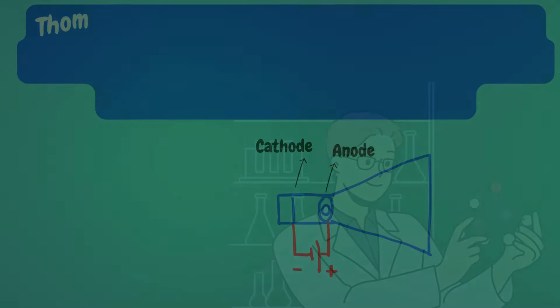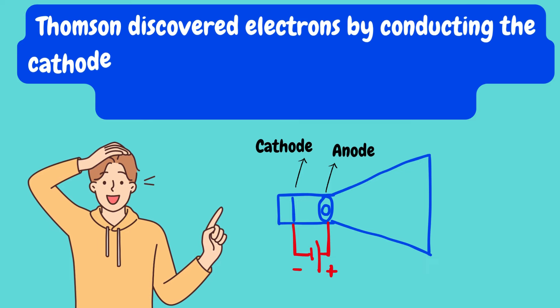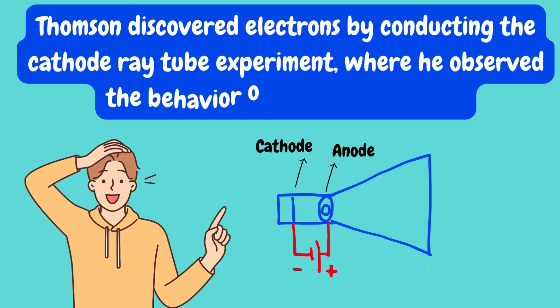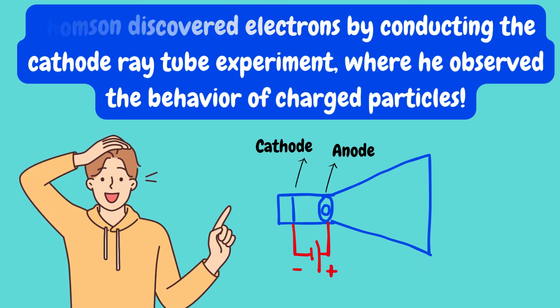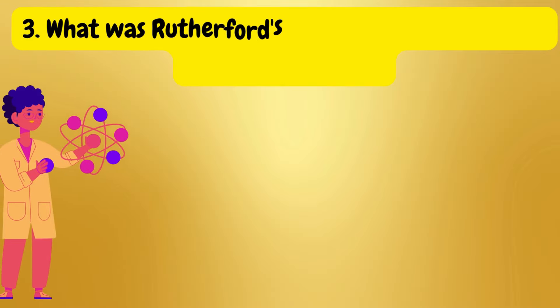Question two: How did Thompson discover electrons? J.J. Thompson discovered electrons through his cathode ray tube experiment, where he observed the behavior of charged particles.